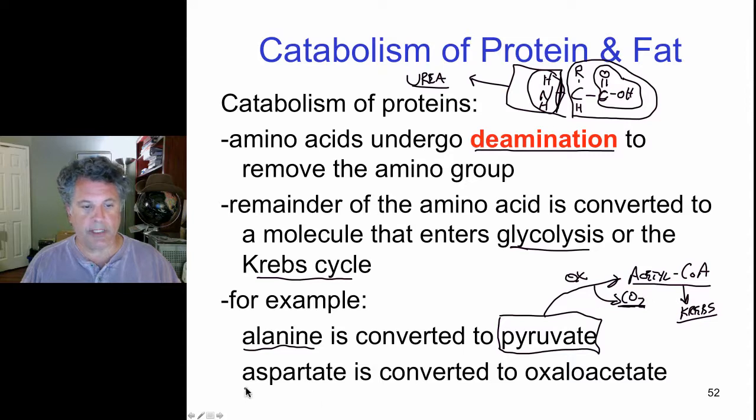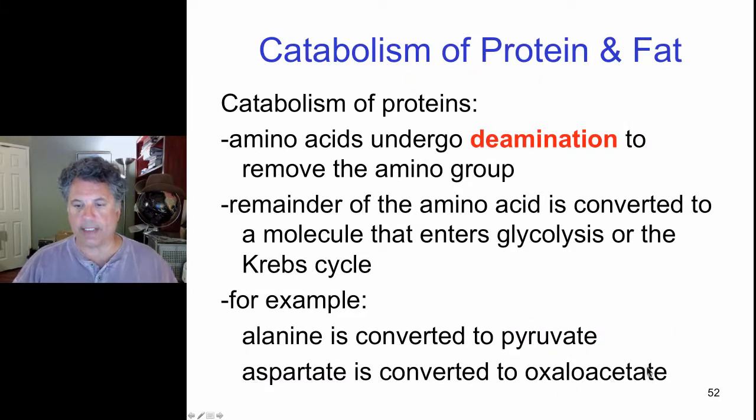Here's another example. Aspartate, another amino acid, can be converted to oxaloacetate. Oxaloacetate is the molecule which is joined to the acetyl group of acetyl coenzyme A to form citric acid in the first step of the Krebs cycle.